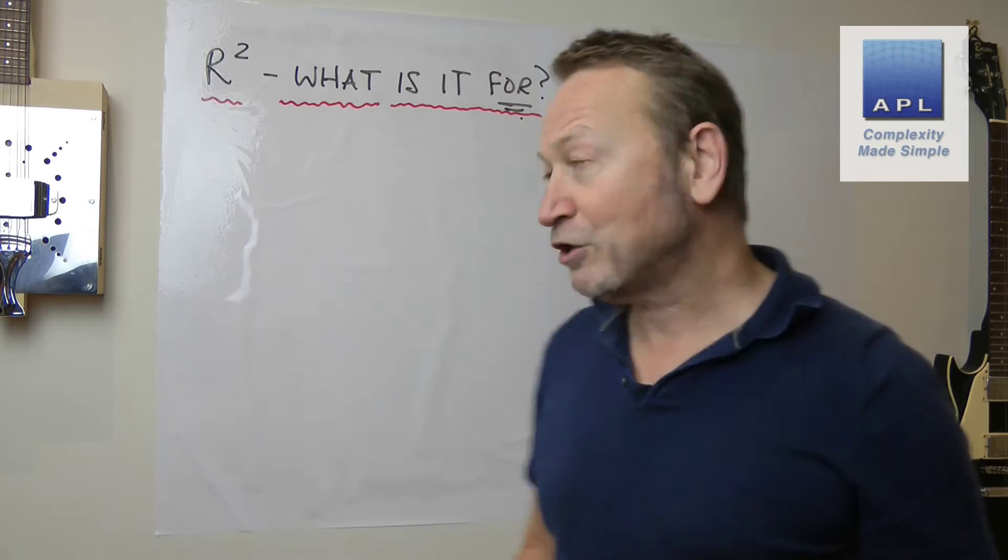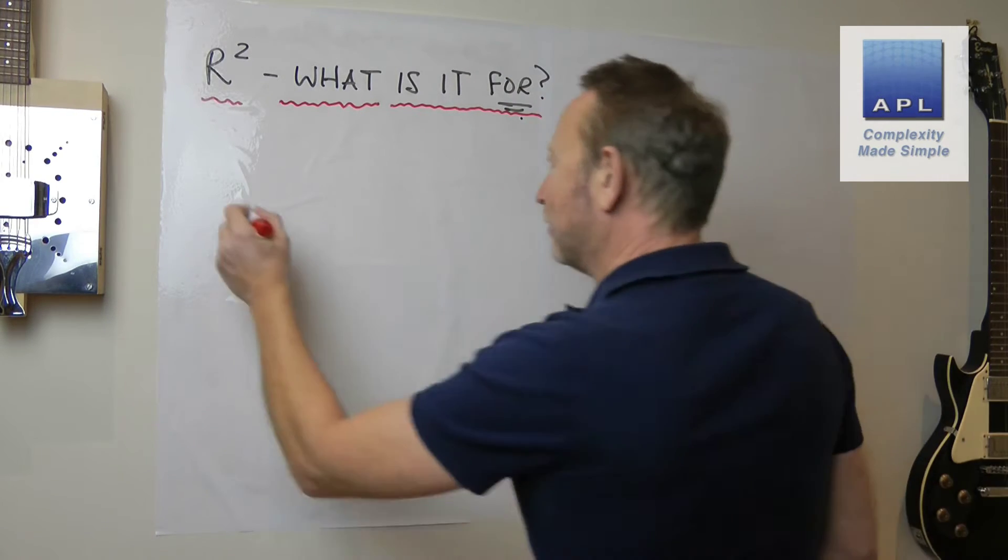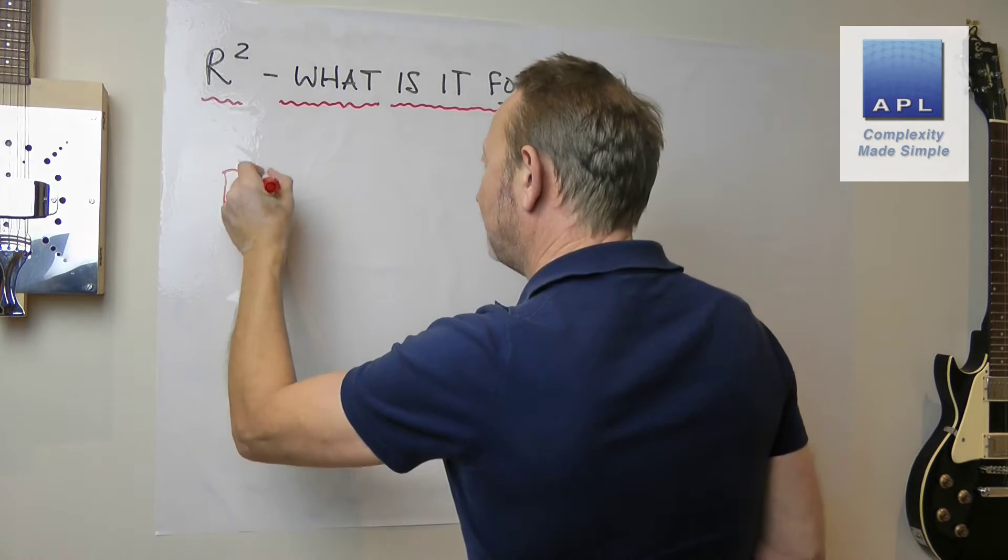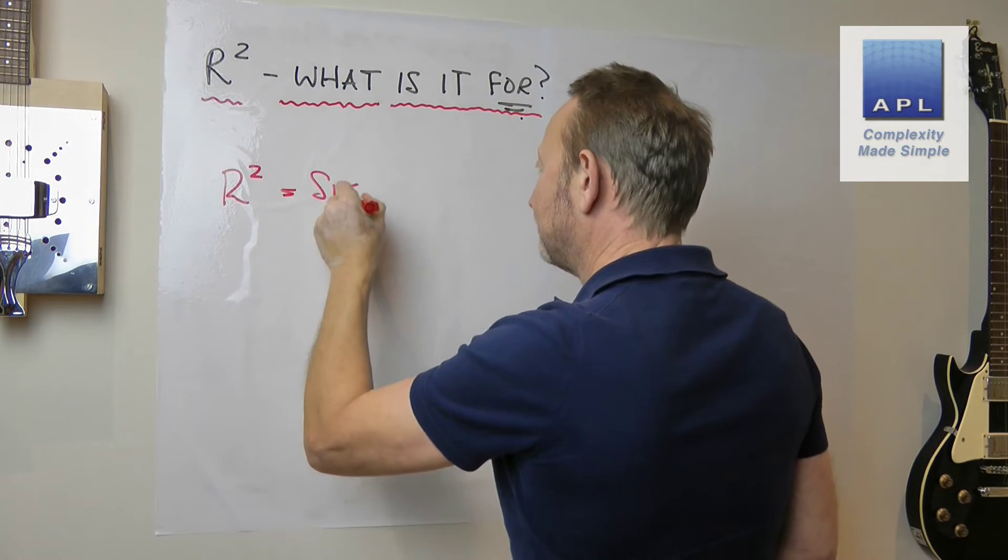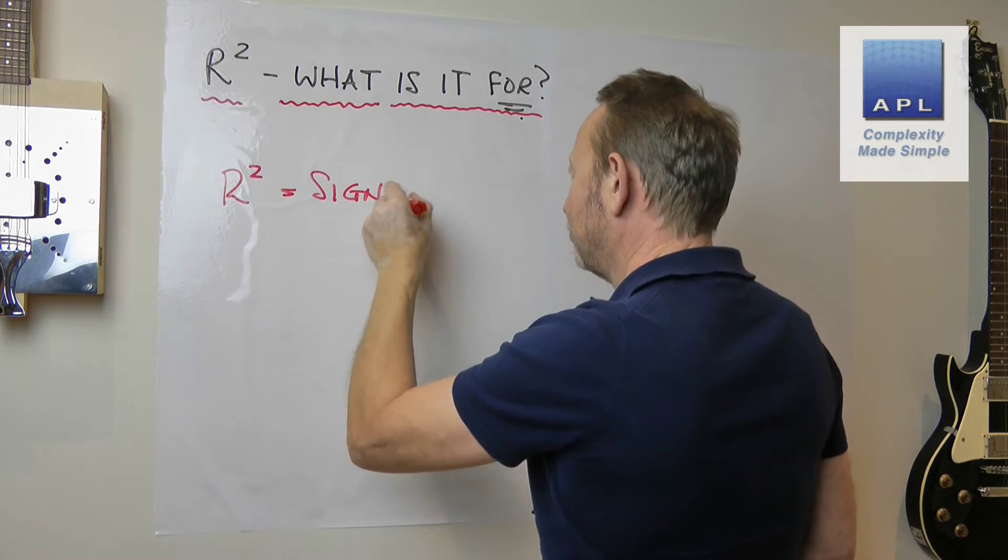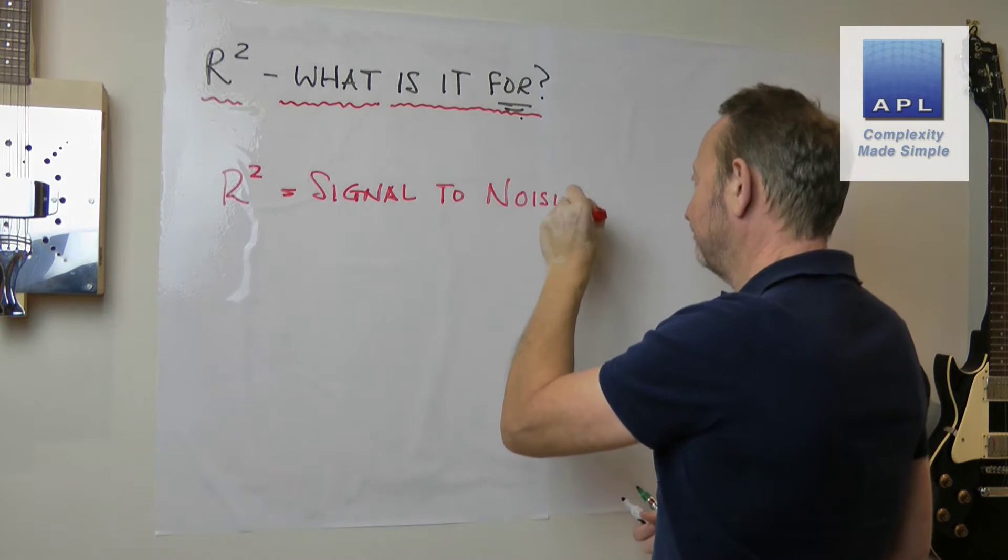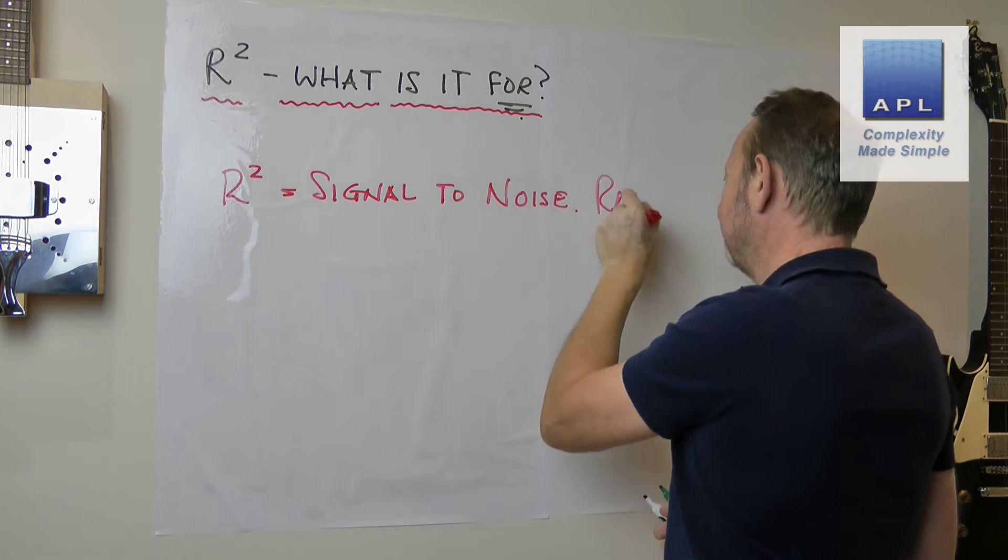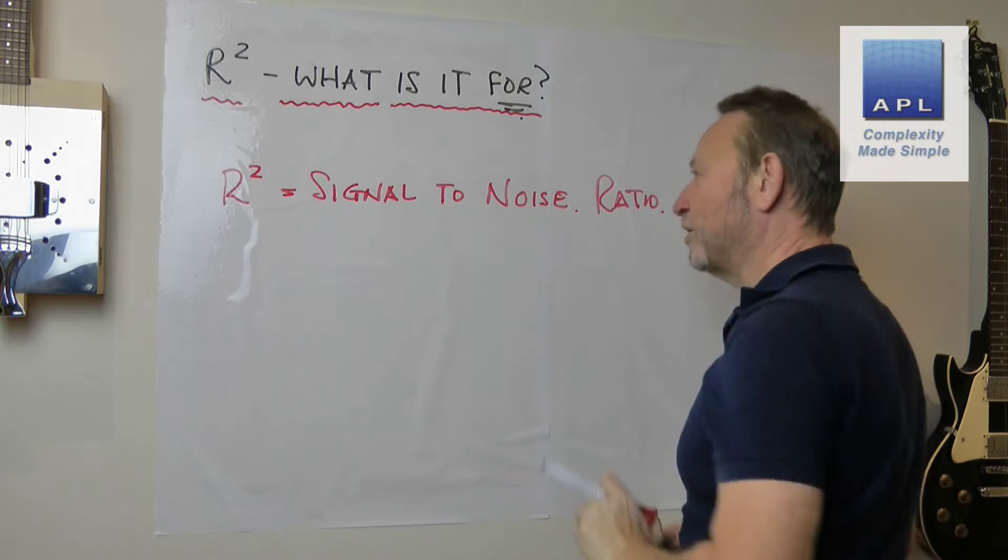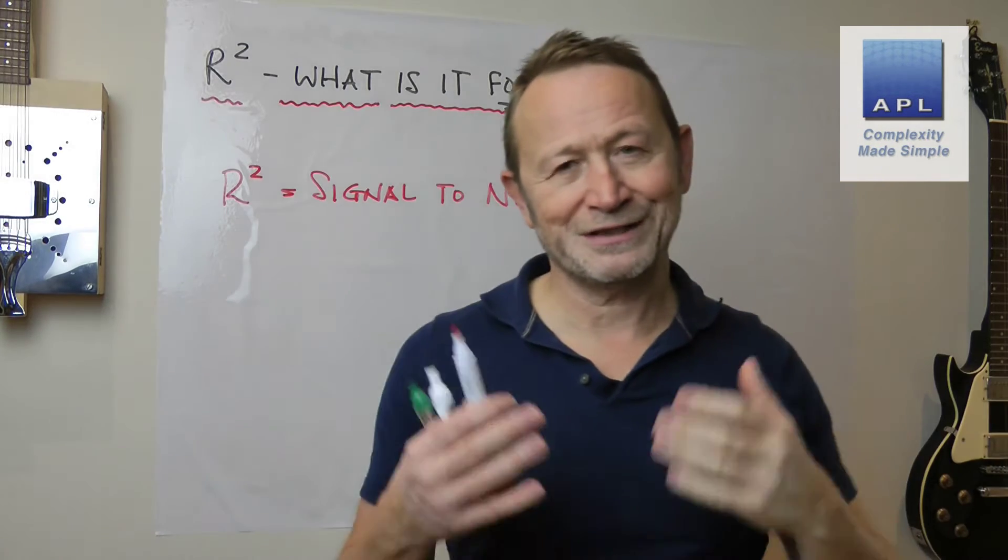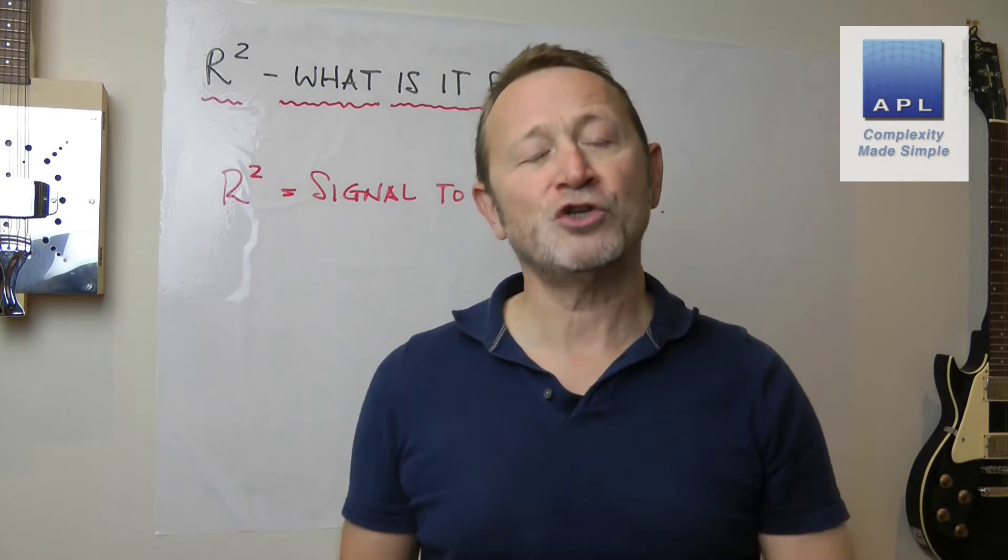So let's talk about what R-squared is. Let's keep it simple, we're not going to do any mathematics in this video because it's not what I do. What we're going to talk about - R-squared, very simply, it is a signal to noise ratio. Pretty much, a simple way of looking at it is a signal to noise ratio.